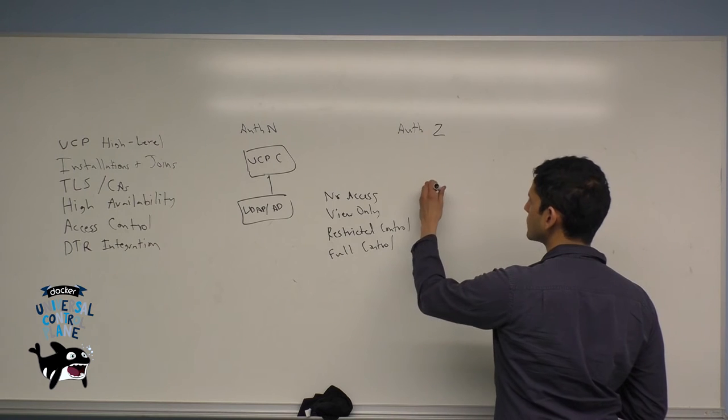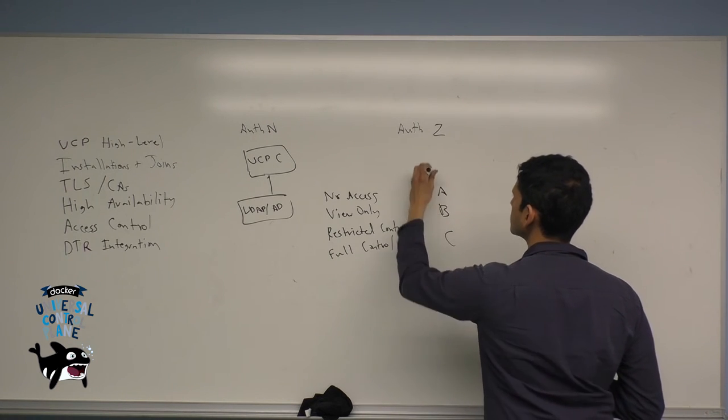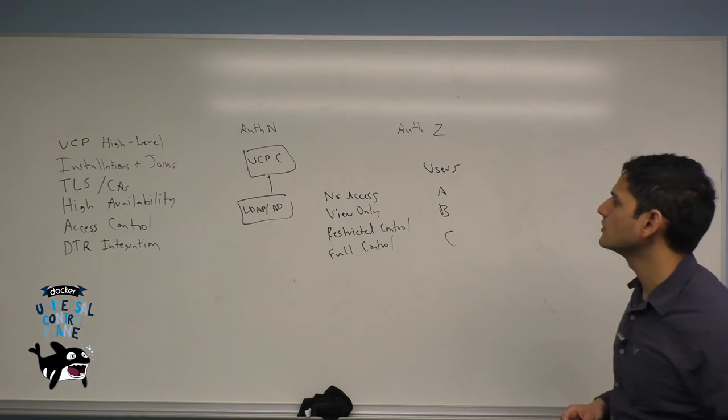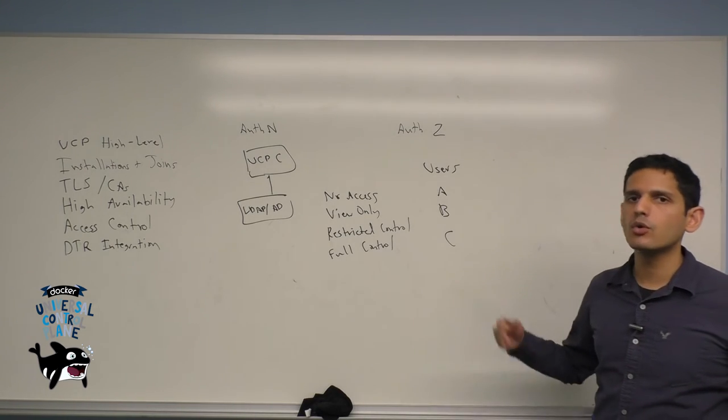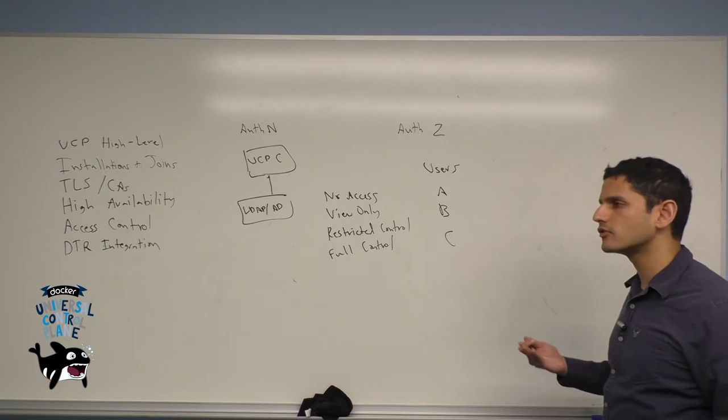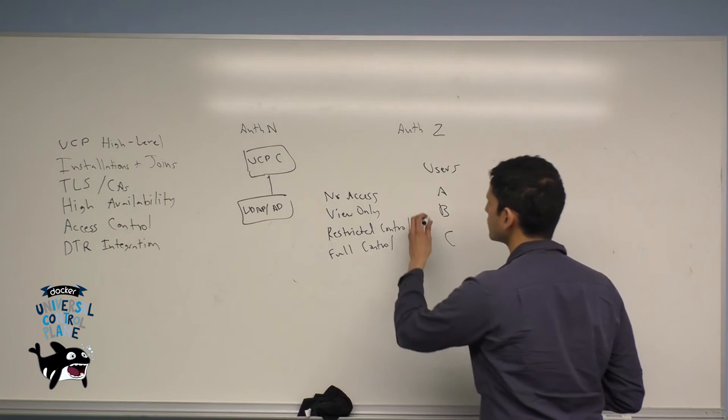So within UCP, let's say you create a series of users - we'll call them A, B, and C. When you create a user and when you edit a user, you can set something called the user default permission. This is what provides you coarse-grained access to containers that are unlabeled or to non-container resources like images, networks, and volumes. And you can set these individually for each user.